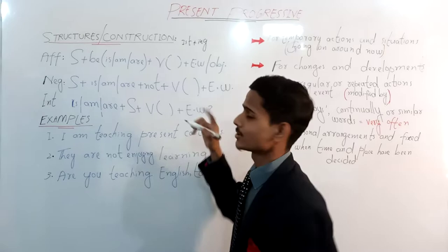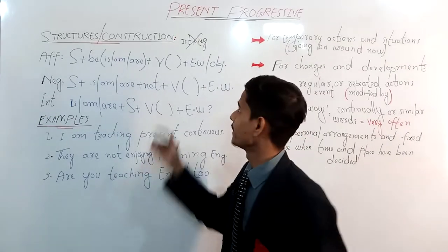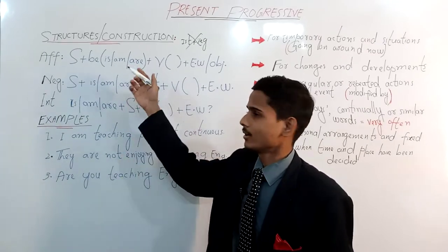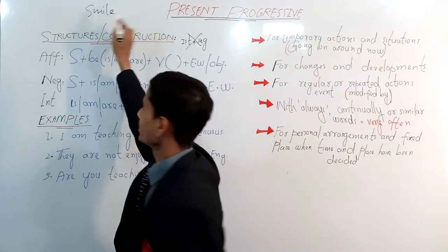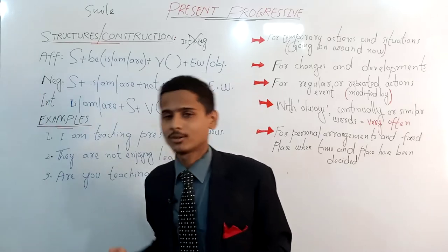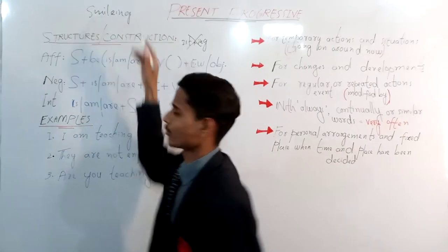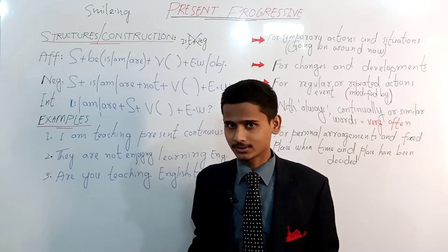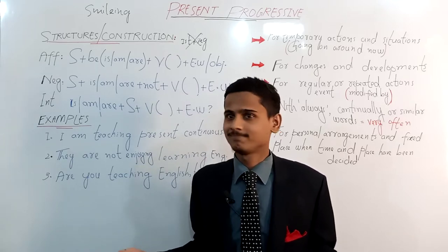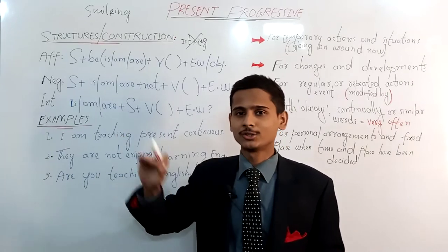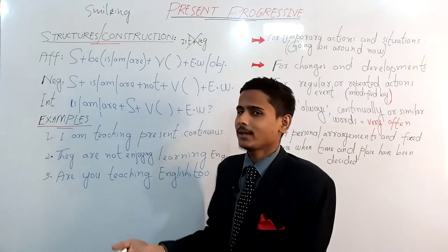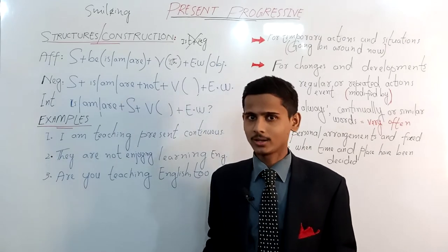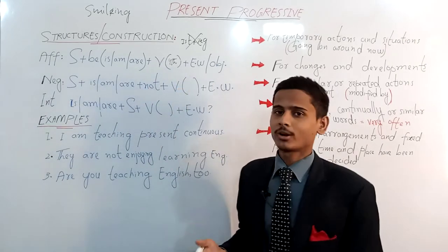Adding 'ing' to the first form might seem correct, but it could be wrong. For example, if I write the word 'smile' and add 'ing' directly, the spelling is incorrect — that form should be eliminated. Instead, I say we have to use the fourth form, which is simply the present participle. Keep that in mind. Then we add an extra word or object.